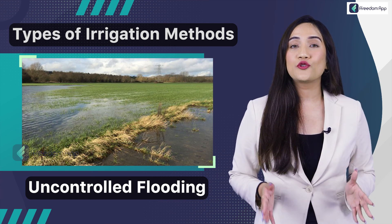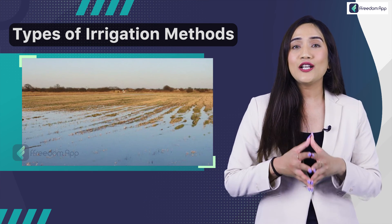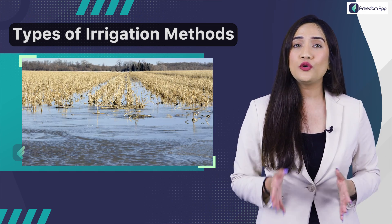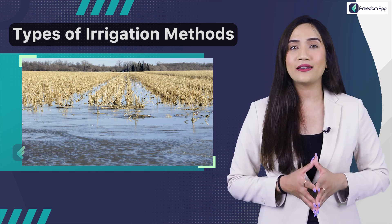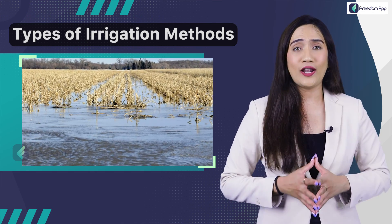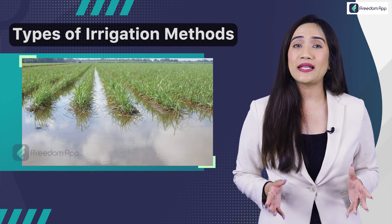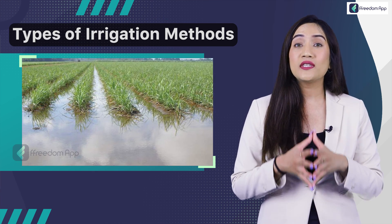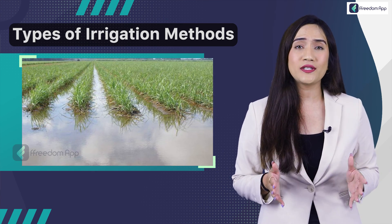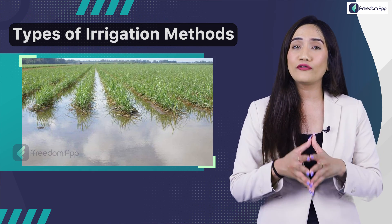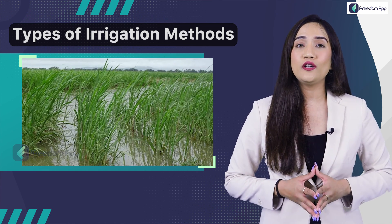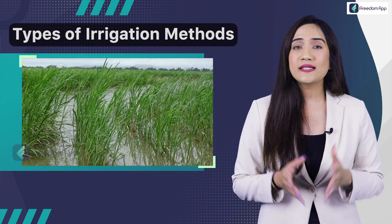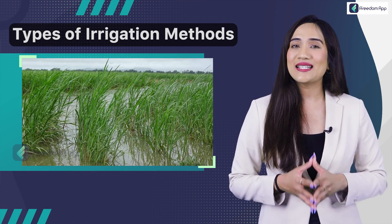In uncontrolled flooding, water is spread or flooded into the field without control of water and preparation of land — it is also called wild flooding. The efficiency of this method depends upon the depth of flooding, the size of the stream, the rate of water intake into the soil, and the topography of the field. This method is suitable for inundation irrigation systems, pastures, and forage crops, and is inexpensive.